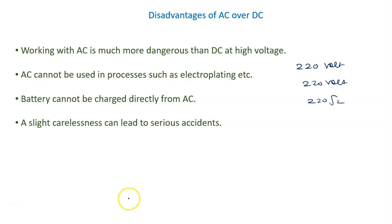AC cannot be used in the process of electroplating because we know in electroplating one should be positive, another should be negative. If we are using AC, then alternately positive will become negative and negative will become positive, so this polarity will change, so we cannot use AC for electroplating.